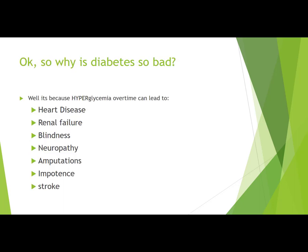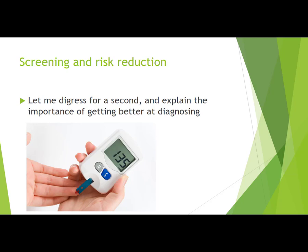Hyperglycemia over time can lead to detrimental and fatal consequences, including heart disease, renal failure, blindness, neuropathy, amputations, impotence, and stroke. As you can see, diabetes is something that definitely needs to be managed.